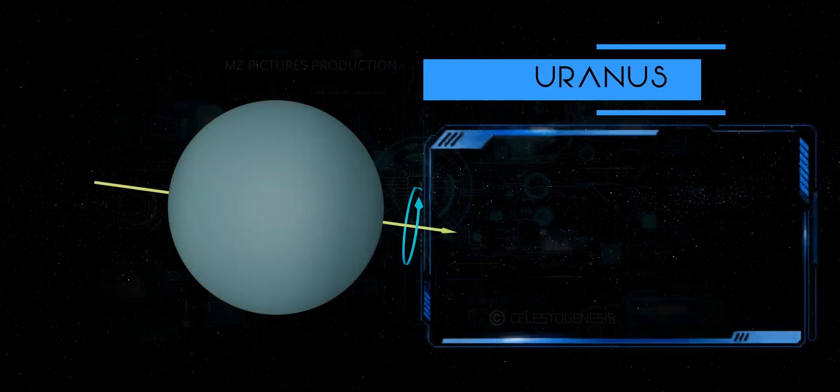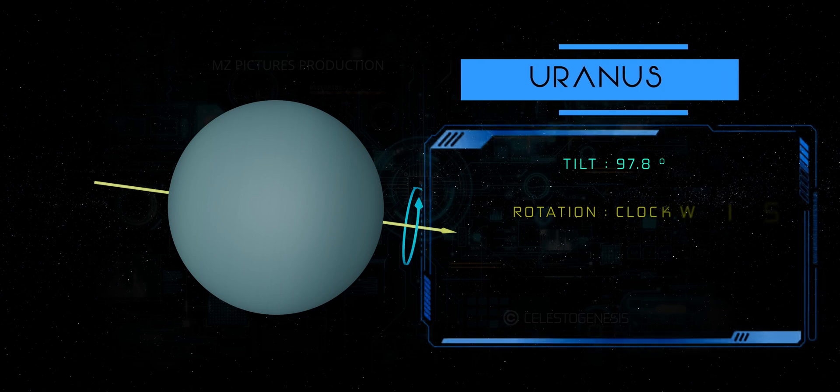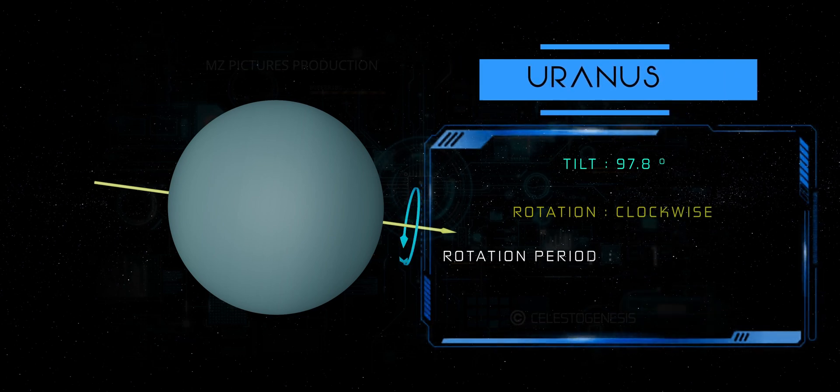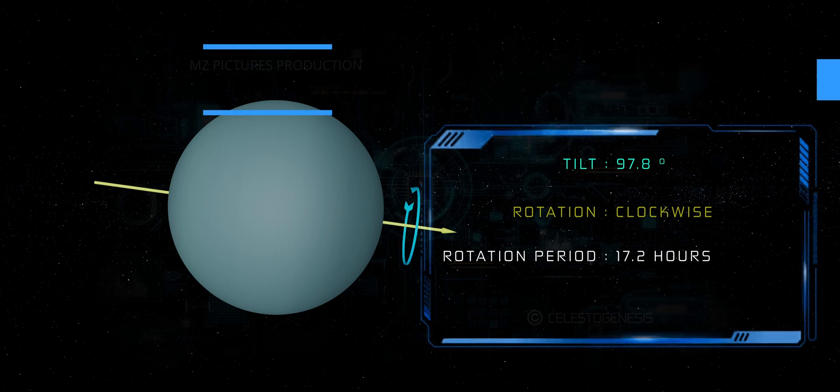Uranus. Uranus has a unique rotation, as it spins on its side with an axial tilt of about 98 degrees. Its rotation is retrograde, clockwise, and it takes about 17.2 hours to complete one rotation.